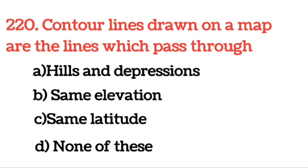Next question: Contour lines drawn on a map are the lines which pass through the same elevation. Contour line जो map पर drawn होती हैं वे same elevation से pass through करती हैं।